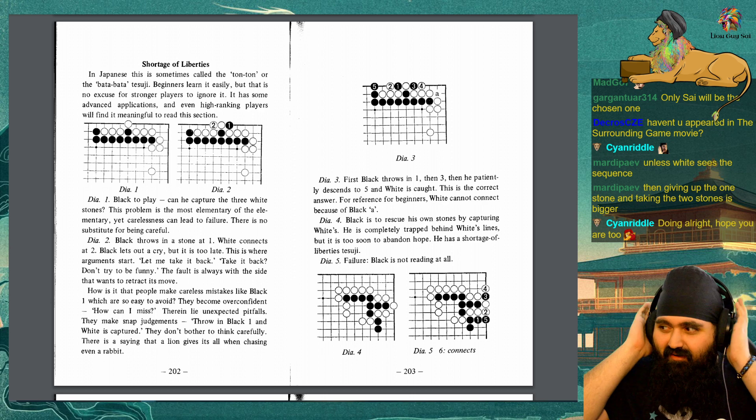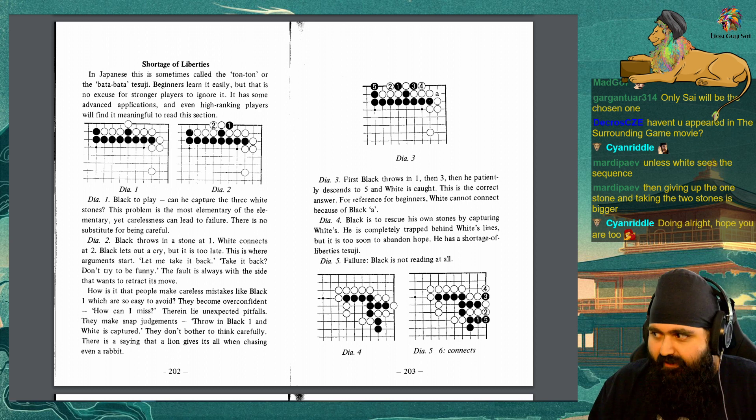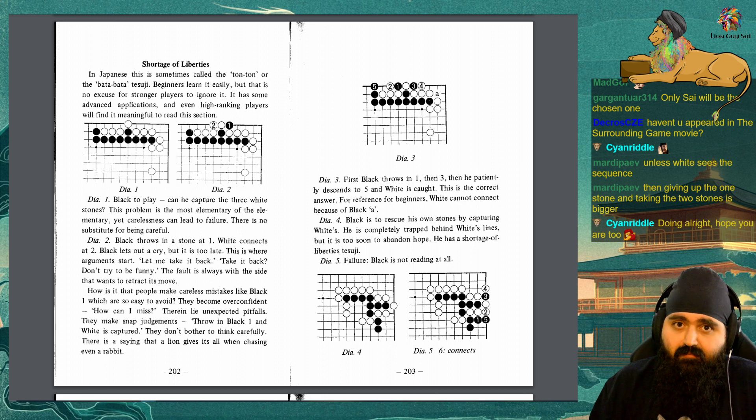Diagram 3: First black throws in 1, then 3, then he patiently descends to 5 and white is caught. This is the correct answer. For reference, for beginners, white cannot connect because of black A. Diagram 4: Black is to rescue his own stones by capturing white. He is completely trapped behind white's lines, but it is too soon to abandon hope. He has a shortage of liberties tesuji. Diagram 5: Failure. Black is not reading at all. Diagram 6: Correct. Black plays 1 to 9 and gives a thari above 6 if white connects.